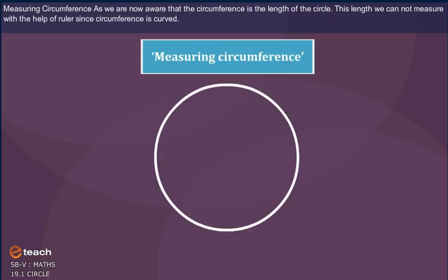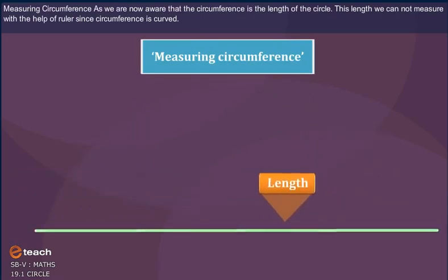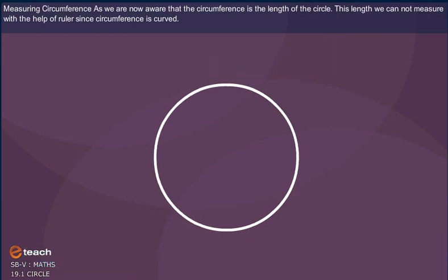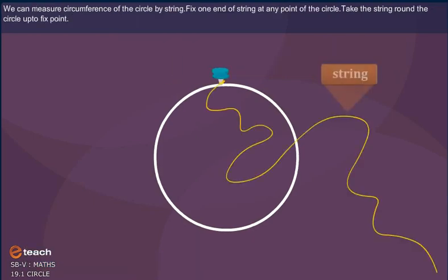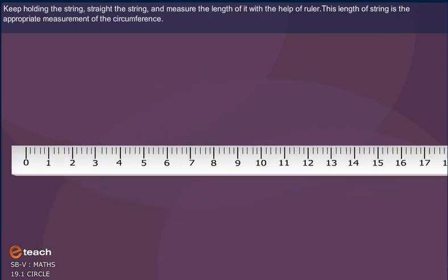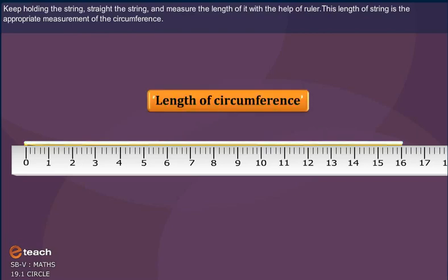Measuring circumference. As we are now aware that the circumference is the length of the circle, this length we cannot measure with the help of ruler since circumference is curved. We can measure circumference of the circle by string. Fix one end of string at any point of the circle. Take the string round the circle up to fixed point. Keep holding the string. Straighten the string and measure the length of it with the help of the ruler. This length of string is the appropriate measurement of the circumference.